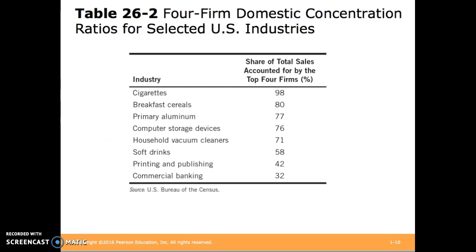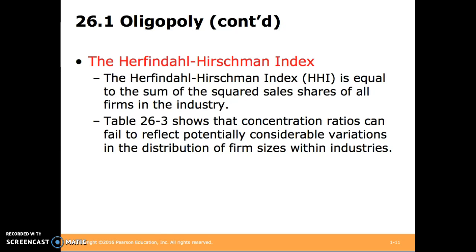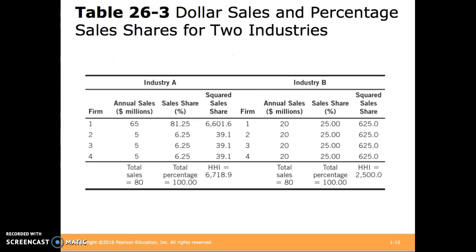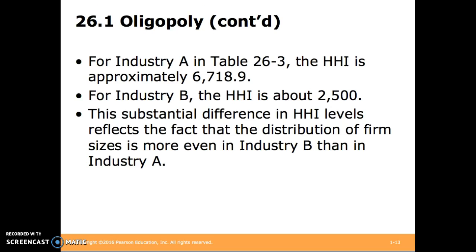Here's a chart showing some of the highest concentration ratio industries in the U.S. Alternatively, we might consider the HHI, which is equal to the sum of the squared sales shares of all firms in the industry. This chart illustrates some of the issues with the concentration ratio and why we may choose to use the HHI. In industry A, all four firms constitute 100%, the same as industry B. However, the HHI in industry A is significantly higher than in industry B. Their concentration ratios would be exactly the same at 100%, while their HHIs tell a different story.